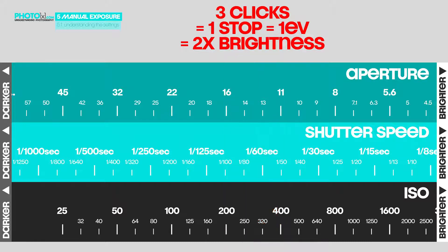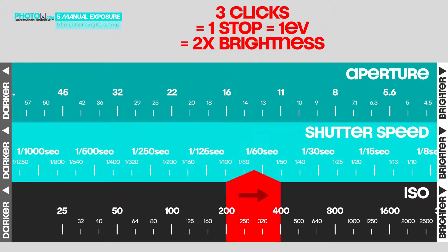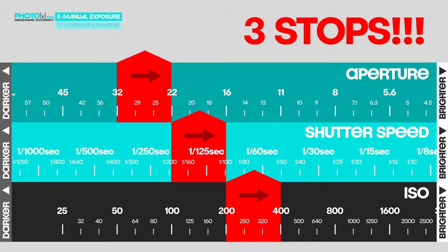To make an image one stop brighter means either three clicks aperture, or three clicks shutter speed, or three clicks ISO. If you change each of them by three clicks, that would be three stops.